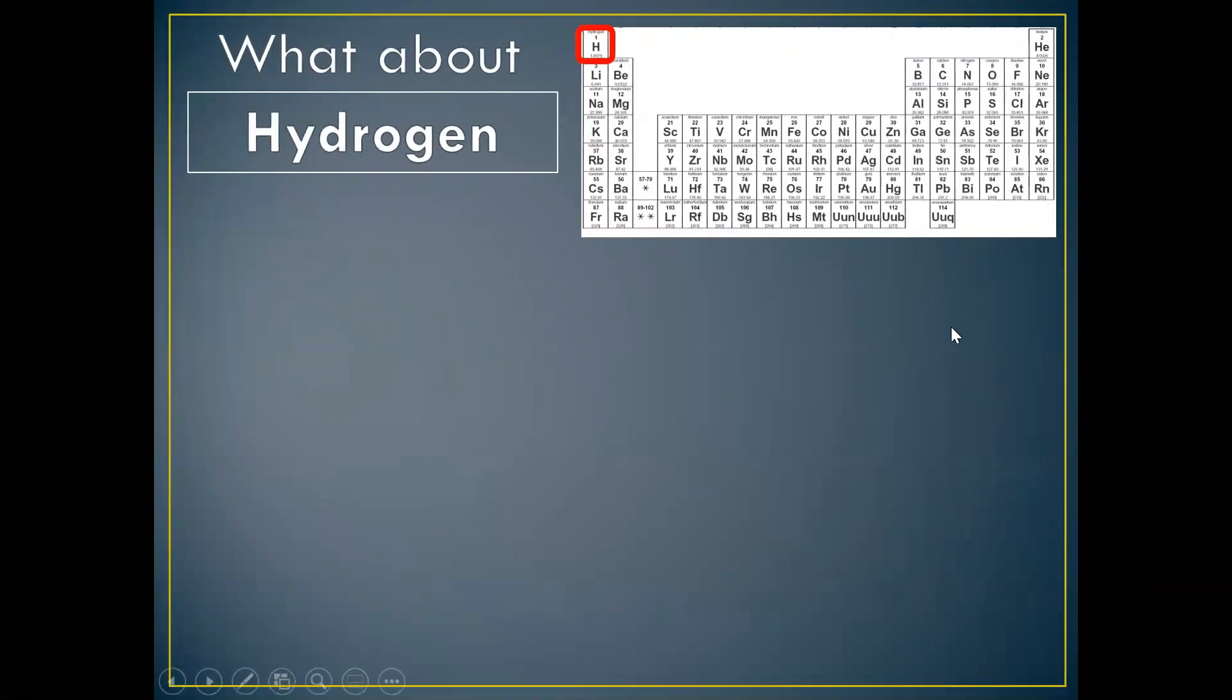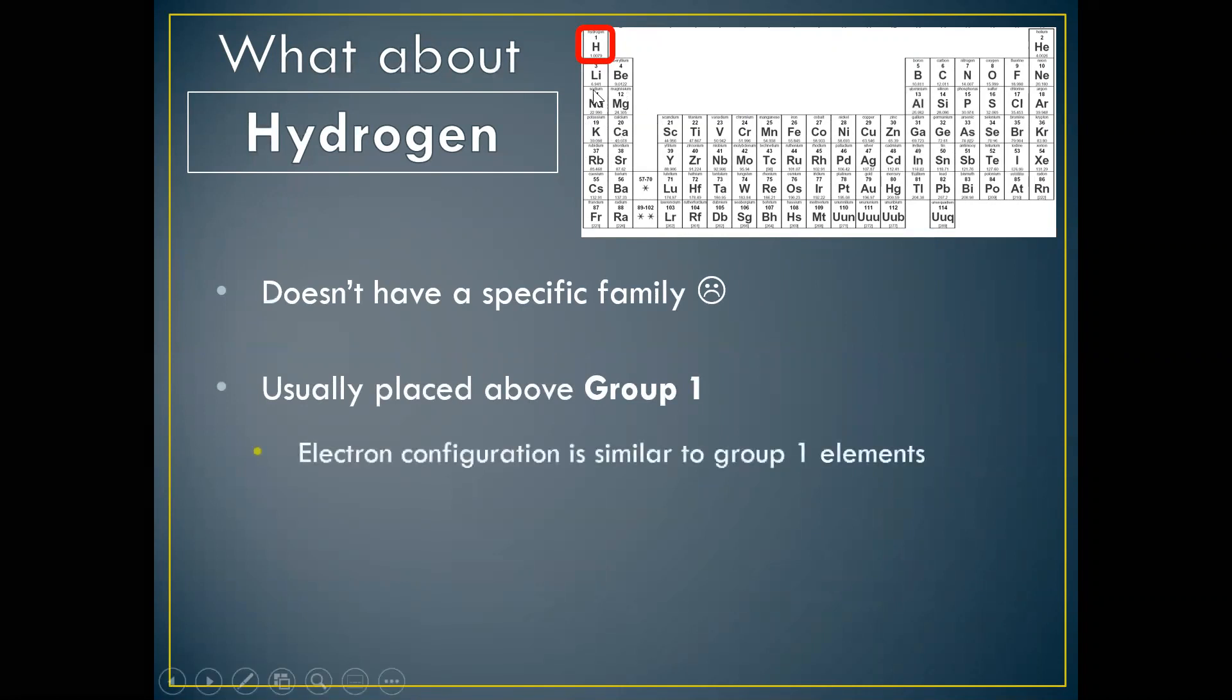So that is it for our main families, but we have one element we did not talk about yet. What about poor little hydrogen? Hydrogen, it does not fit into group one family because it's not an alkaline metal. Hydrogen is a non-metal. So, why don't we place it above group one? Why don't we just place it right here? Randomly placed. So, hydrogen is the only element that does not belong to a specific family. It is usually found placed above group one on the periodic table. And there is a reason. It's because the electron configuration, which you haven't learned yet, that's chapter four, the electron configuration of hydrogen is similar to the electron configuration of the alkaline metals.